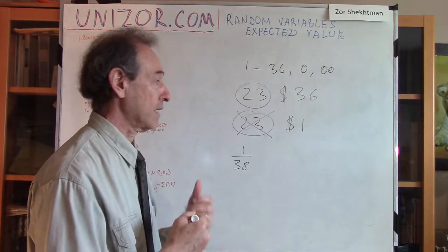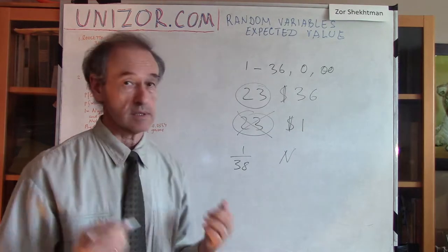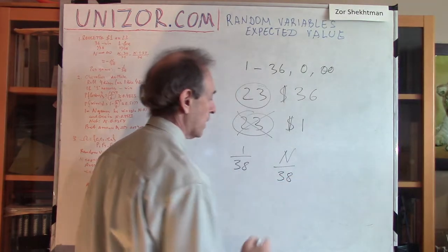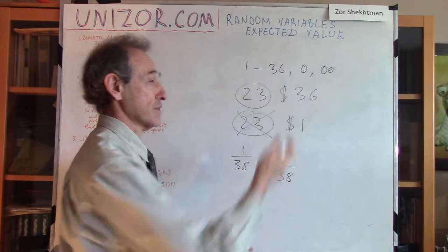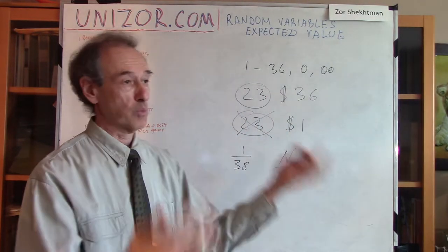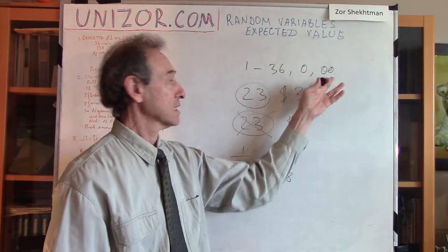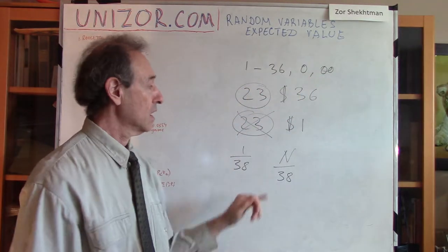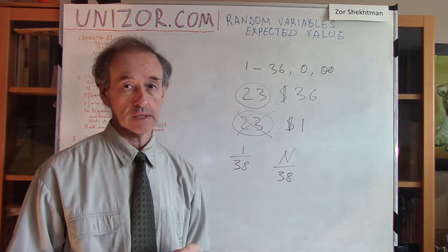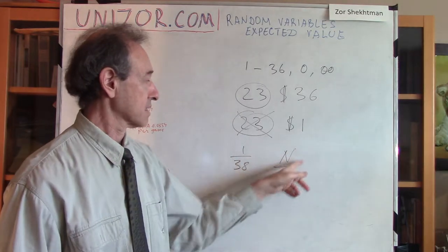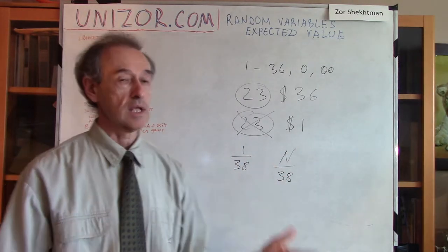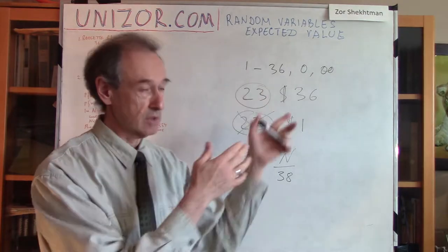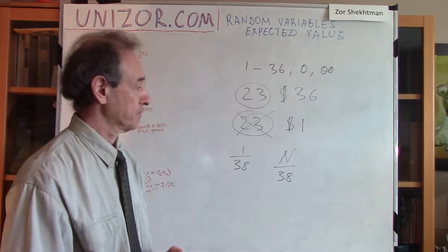What does it mean that the probability is 1/38 for each result? It means that if you have n different experiments — where n is a really large number, the larger the better — then 1/38 of these will be, say, number 23, and n/38 will be number 1, and n/38 times will be number 00, etc. Each result out of these 38 will occur approximately n/38 times. That's what it means: out of n experiments with 38 equally probable results, approximately 1/38 of n results will occur with any particular number, such as number 23.